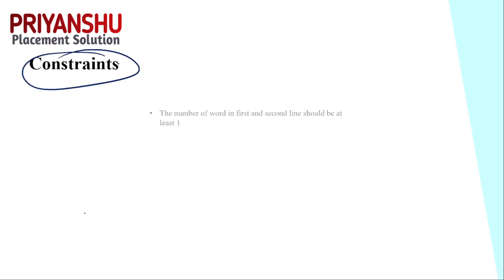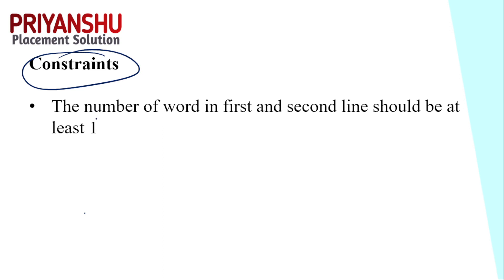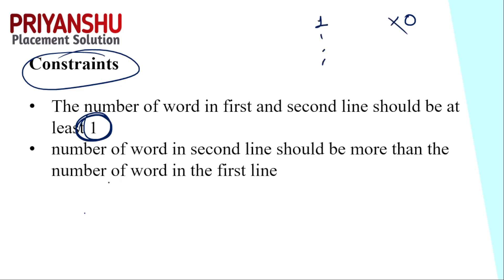In every IBM exam question you will get constraints showing the limit of our program. The constraints are: the number of words in the first line should be at least one — it starts from minimum one. The number of words in the second line should be more than the words in the first line.